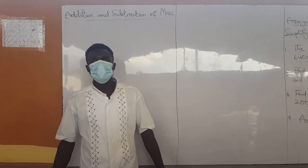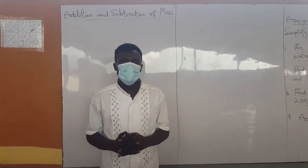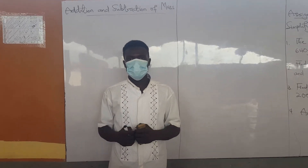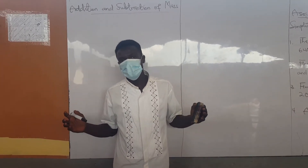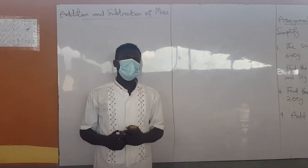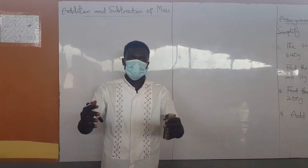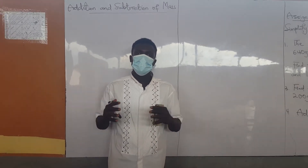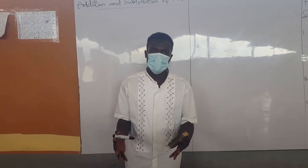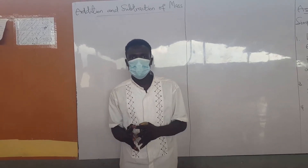Now, when we say mass, what is mass? Mass of a container, of a substance, simply means the weight of the substance or the container. That is the meaning of mass. Now, in mass, the metric unit for mass is kilograms for huge weights, then grams for small weights. So what do we want to do? We want to look at the addition and subtraction of masses.